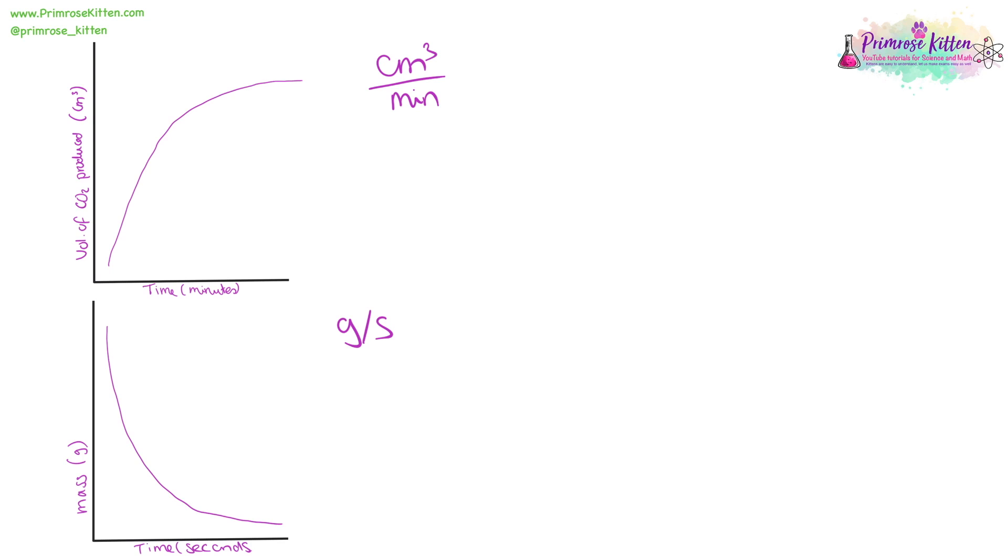In the first graph, it is volume of carbon dioxide being produced, so you can see that is going up. And in the second graph, it is mass being lost, so you can see that is going down.